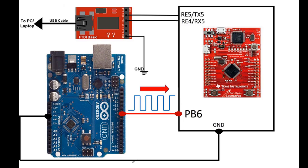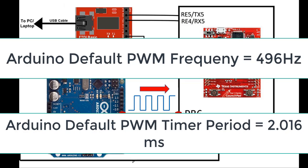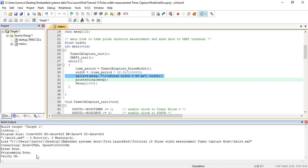Also, make sure to connect ground terminals of TM4C123 and Arduino with each other. By default Arduino Uno generates a 496Hz PWM signal. That means the time period of the Arduino default PWM signal is 2.016ms.